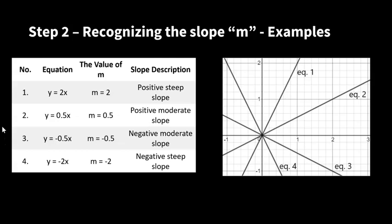To see several different functions, let's look at these equations. y equals 2x. This means that the value of m is 2. This is equation 1. We see that 2 is a rather positive steep slope. Number 2, y equals 0.5x, which means that the positive slope is a bit more moderate. This is number 2.